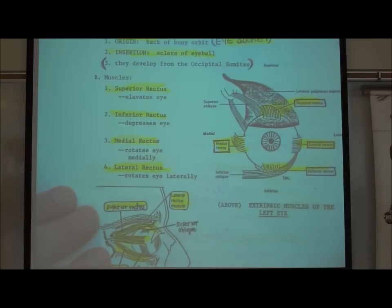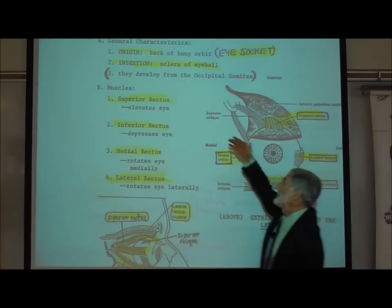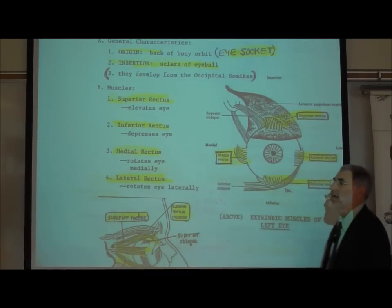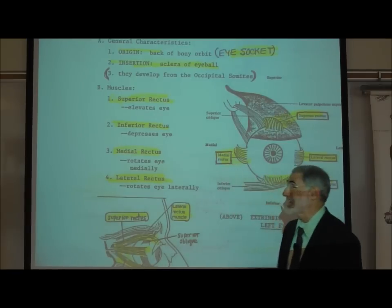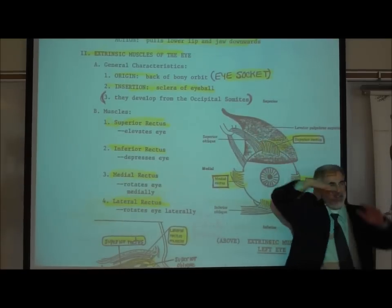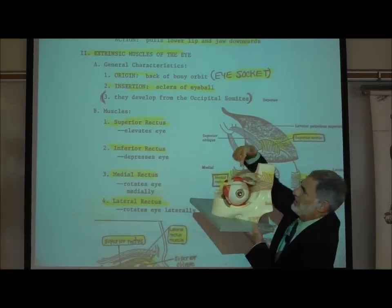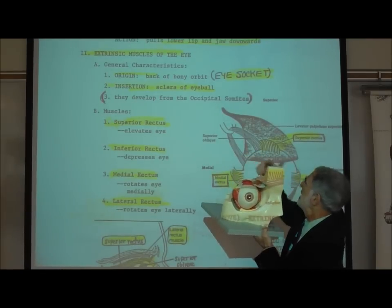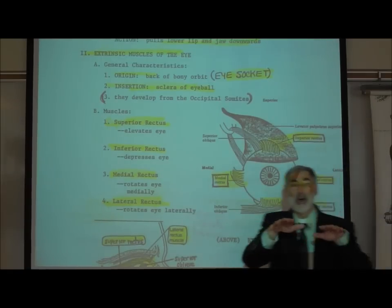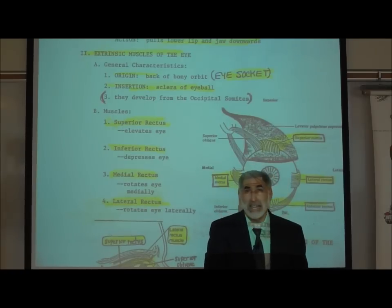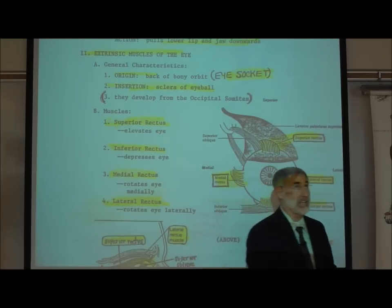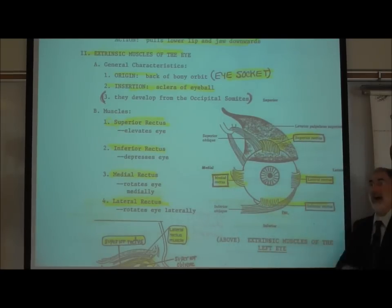There are actually six muscles that move each eye, but we're only going to ask you to know four. The superior rectus, the inferior rectus, the medial rectus, and the lateral rectus. Rectus means straight. The superior rectus is a straight muscle that inserts on the top of the eye. When it contracts, it rotates your eyes upwards — so when you raise your eyes towards the ceiling, you're using the superior rectus.